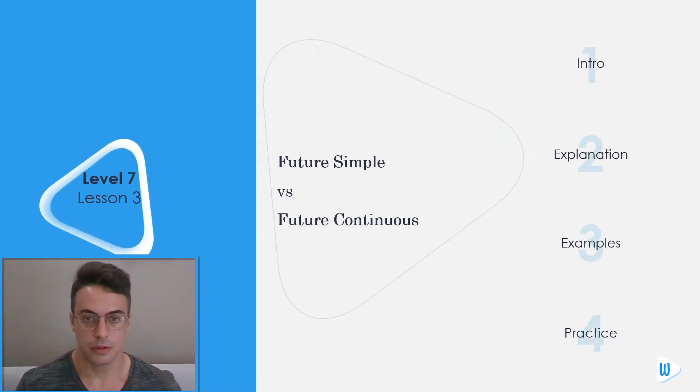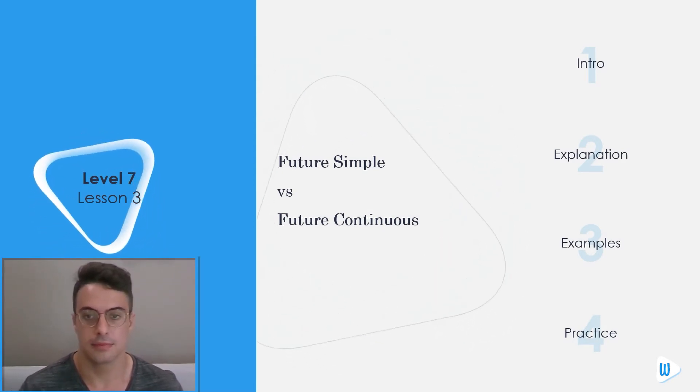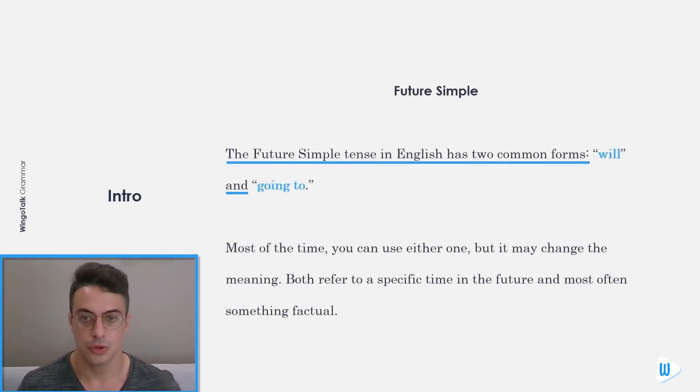Level 7 Lesson 3: Future Simple vs Future Continuous. Future Simple: The future simple tense in English has two common forms, will and going to.